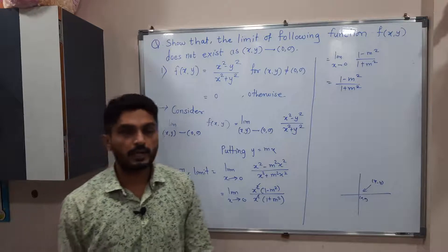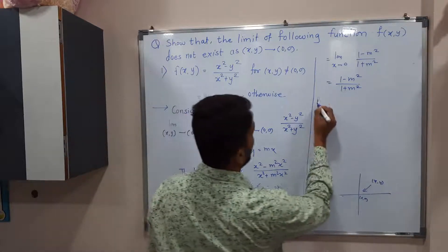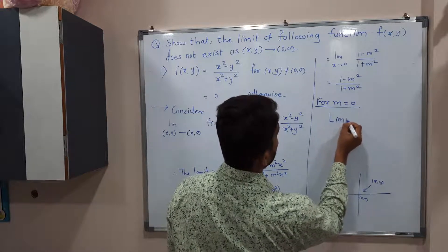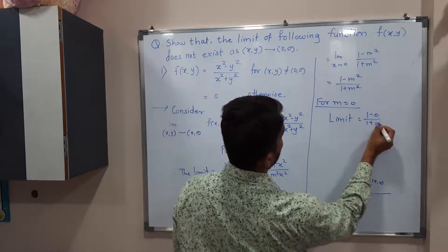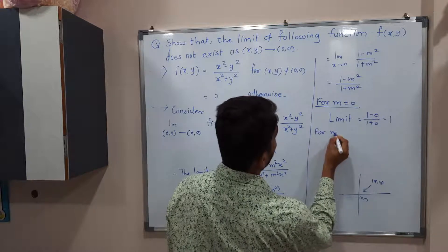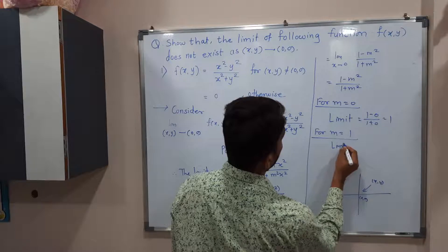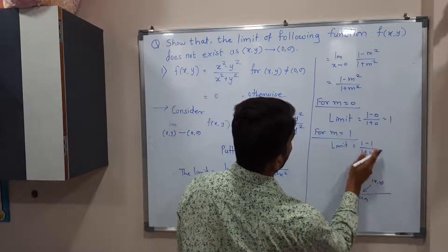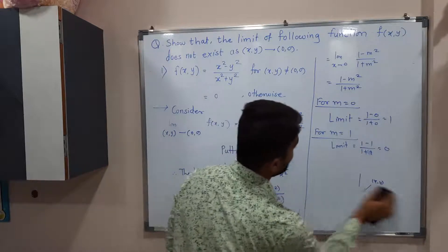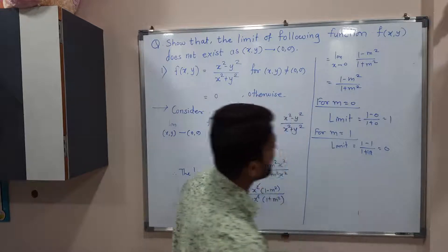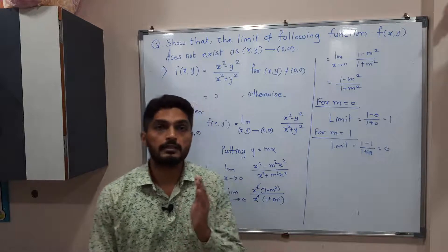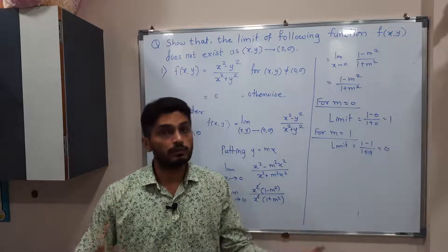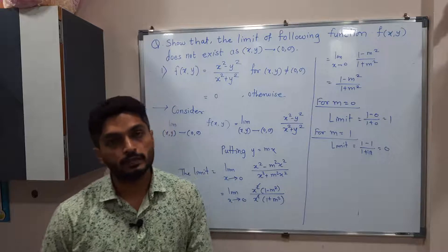But m is not fixed — m is any arbitrary real number. So if we consider m = 0, the limit equals (1 - 0)/(1 + 0) = 1. But if we consider m = 1, the limit equals (1 - 1)/(1 + 1) = 0. So for different values of m we are getting different values of the limit.